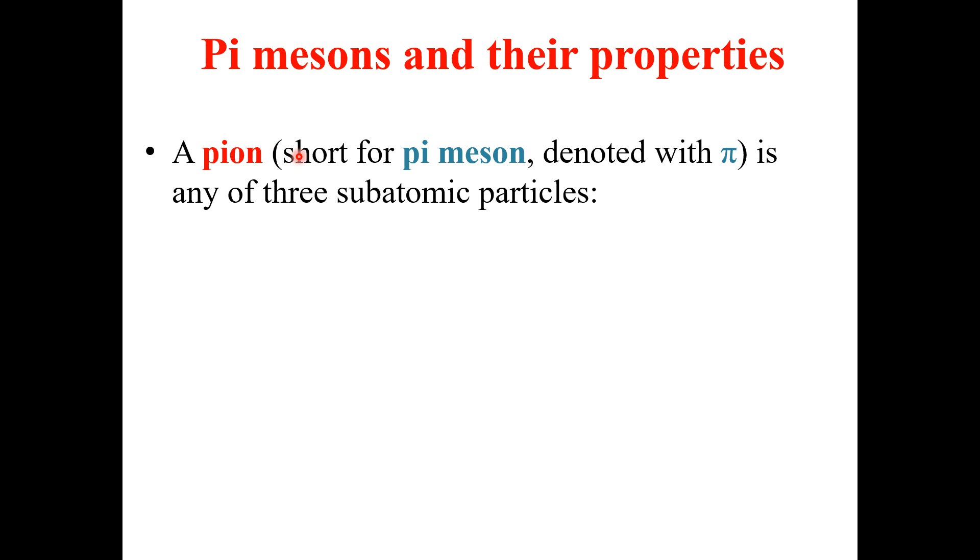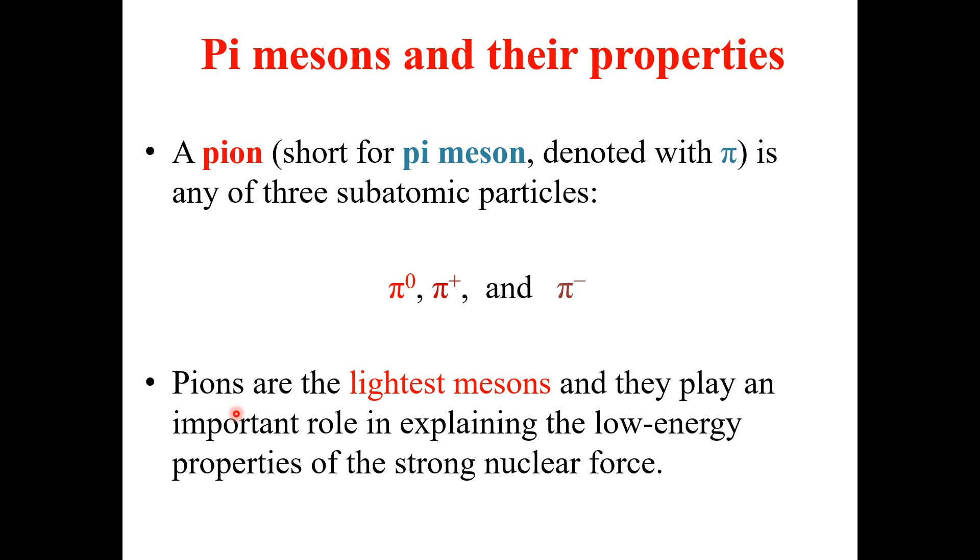Pi Meson, short for Pi Meson, denoted with Pi, is any of the three subatomic particles. That is Pi naught, Pi positive, and Pi negative. So Pi Mesons are the lightest Mesons and they play an important role in explaining the low energy properties of the strong nuclear force.